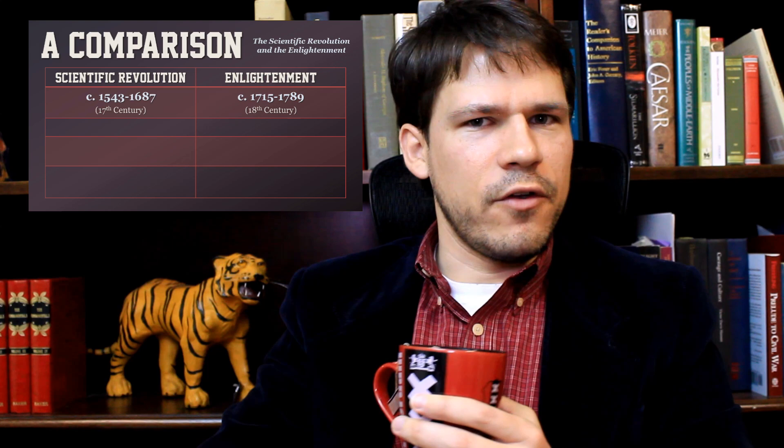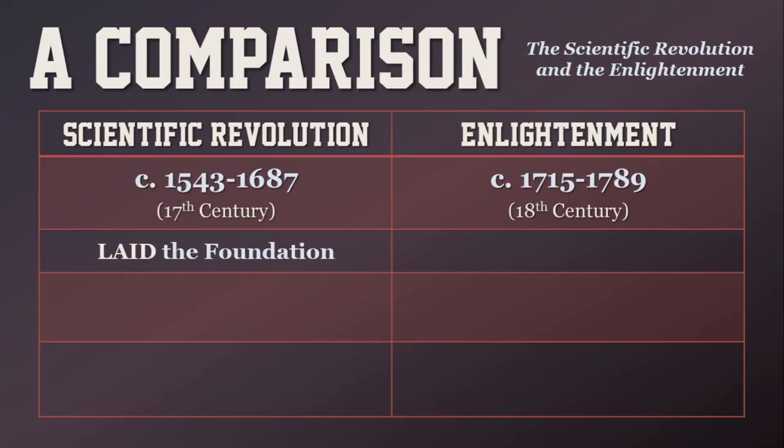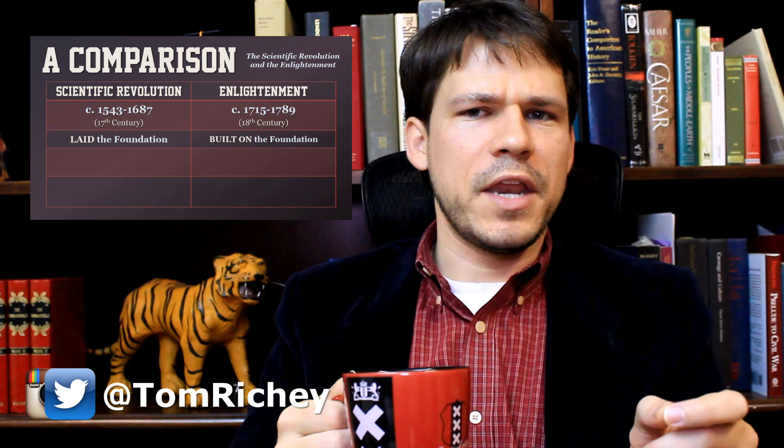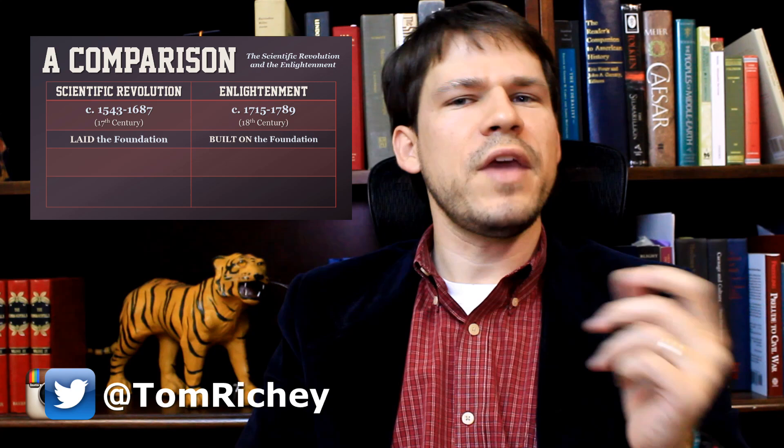First of all, the scientific revolution precedes the Enlightenment — it comes before it. You could think of it maybe like John the Baptist and Jesus, though that's a curious analogy when talking about the Enlightenment. The scientific revolution laid the foundation for new scientific thinking, whereas the Enlightenment is built on that foundation. No scientific revolution, no Enlightenment as we know it.